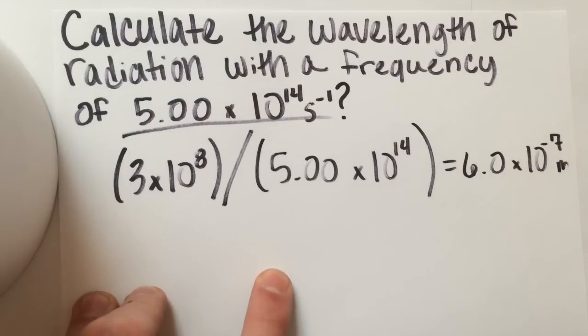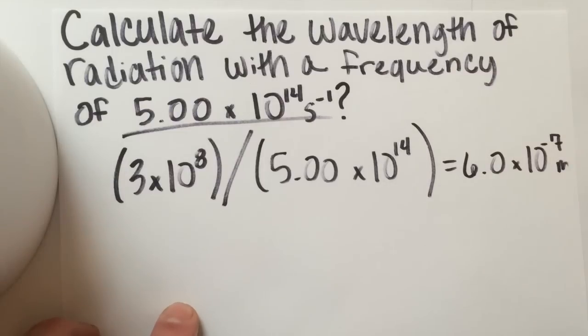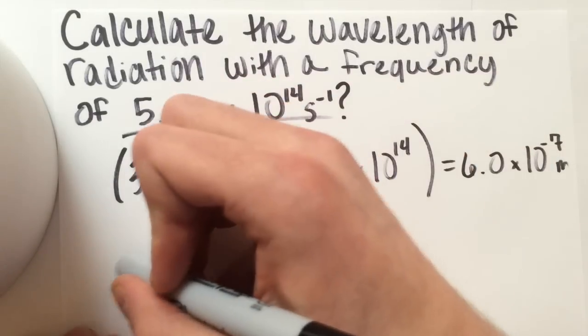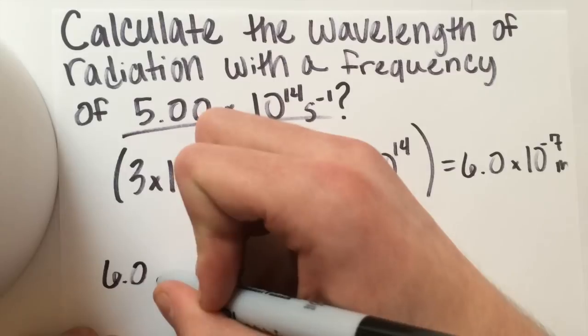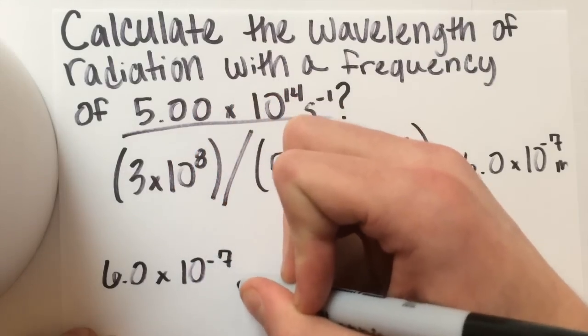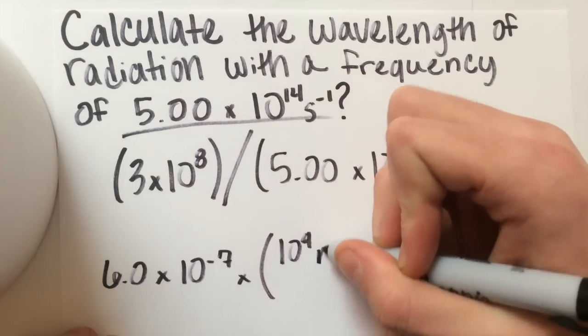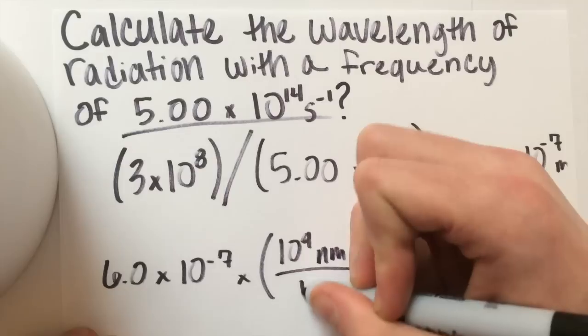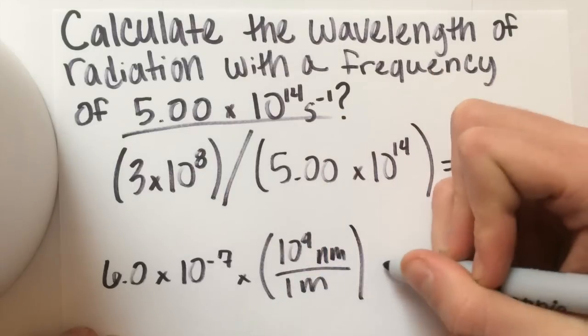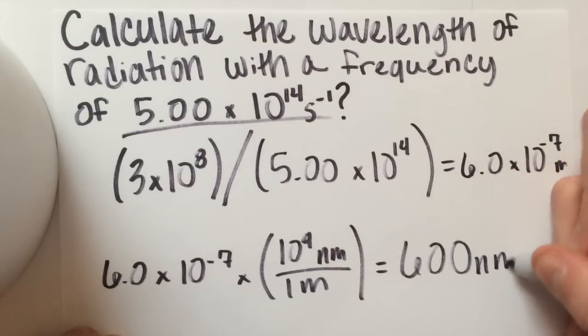So we're going to convert to nanometers again since that's what it's usually wanting anyway. So 6.0 times 10 to the negative 7th times 10 to the 9th nanometers over 1 meter. And that's going to leave you with 600 nanometers.